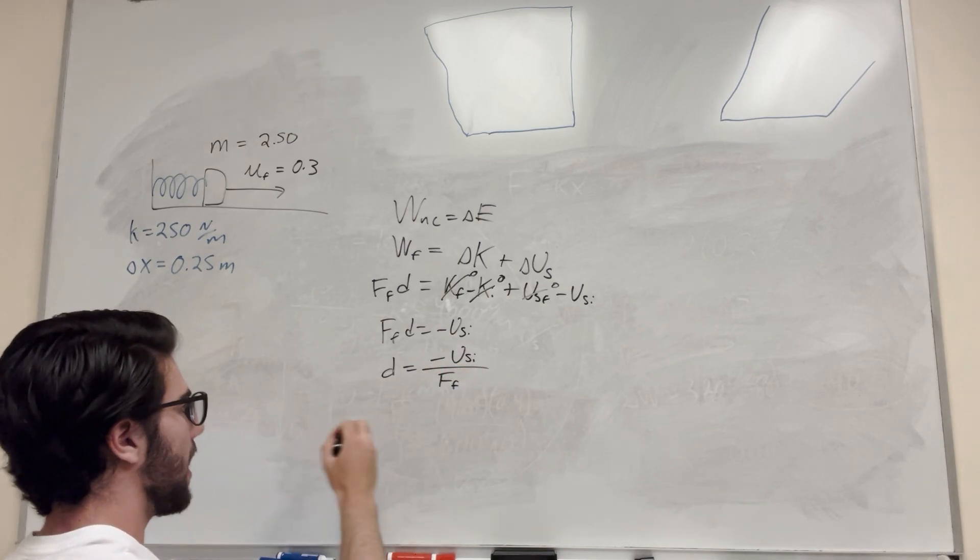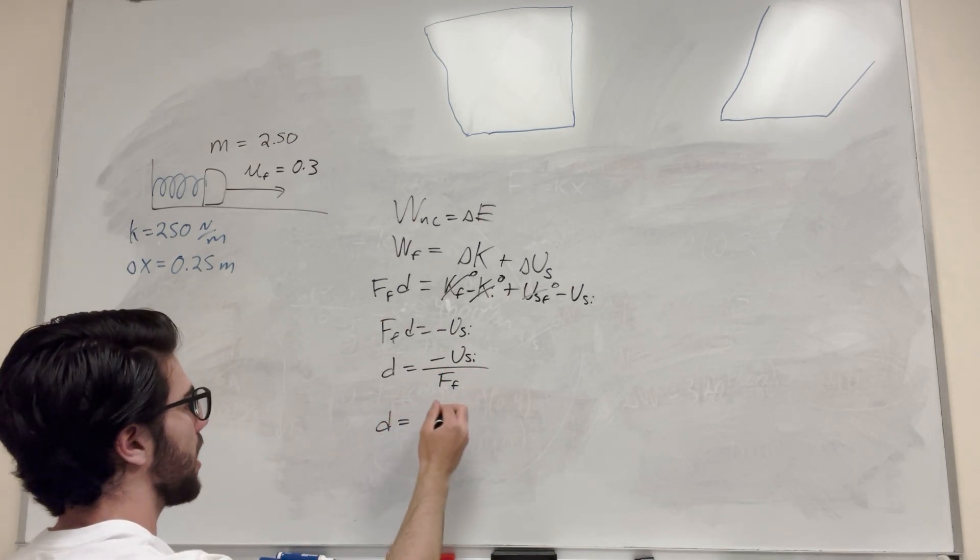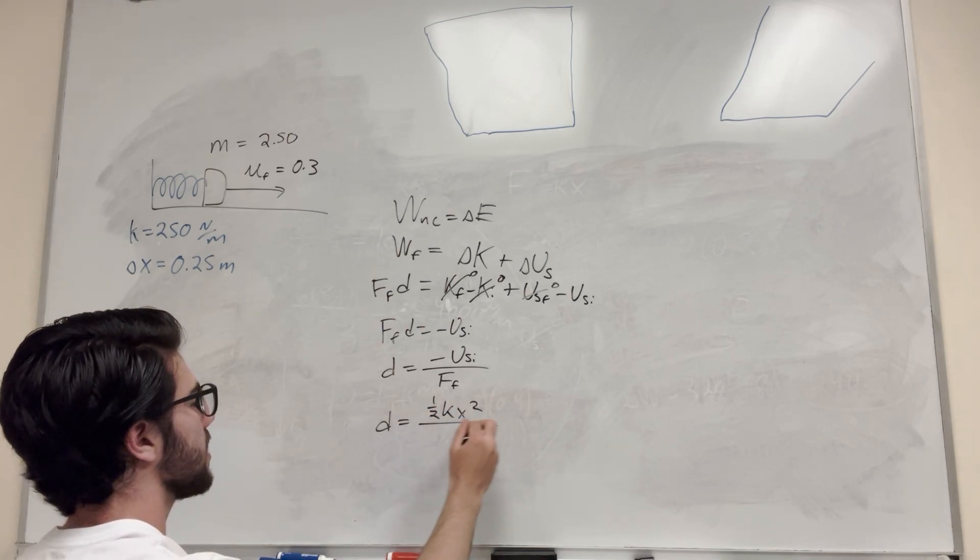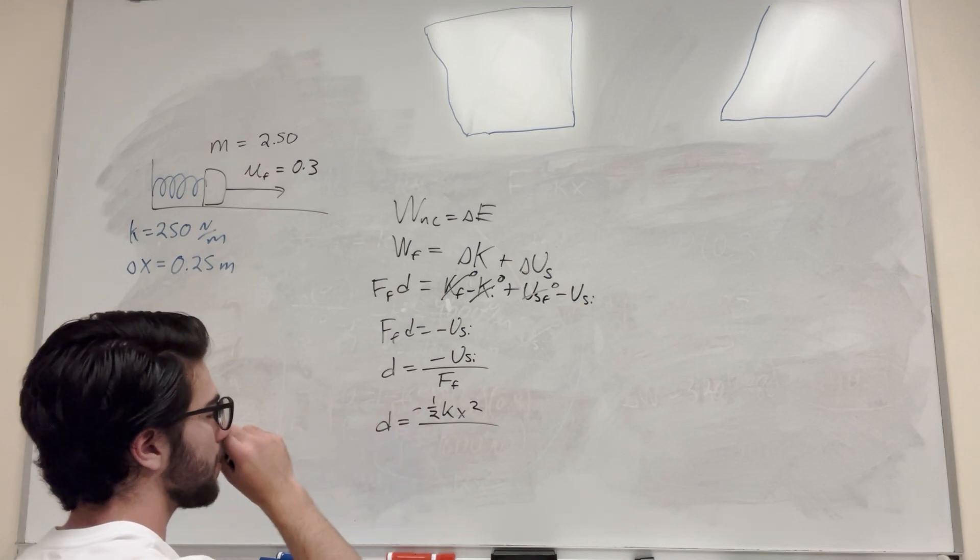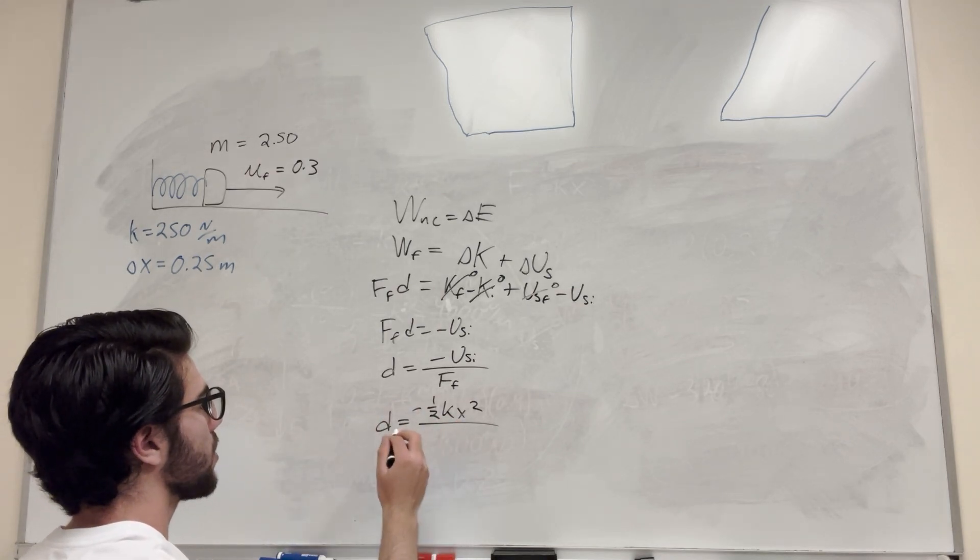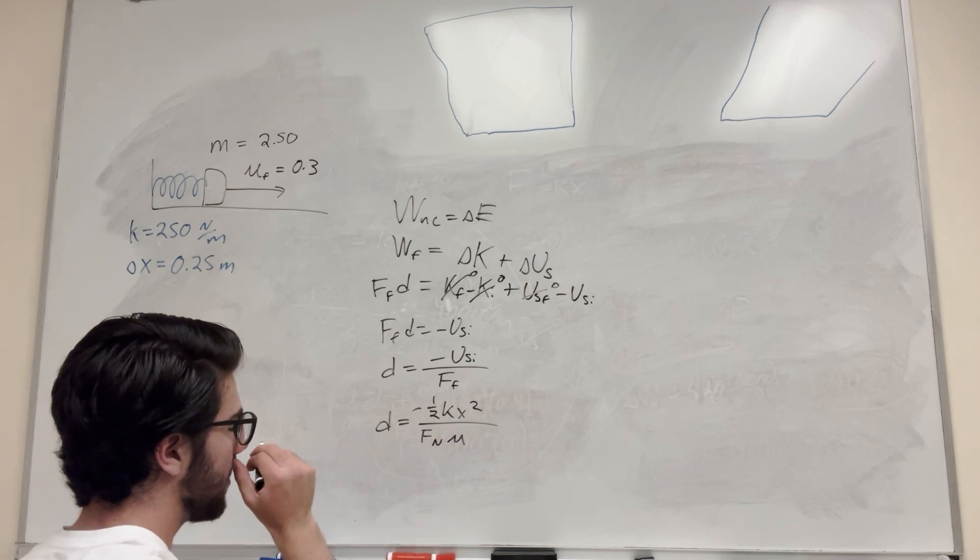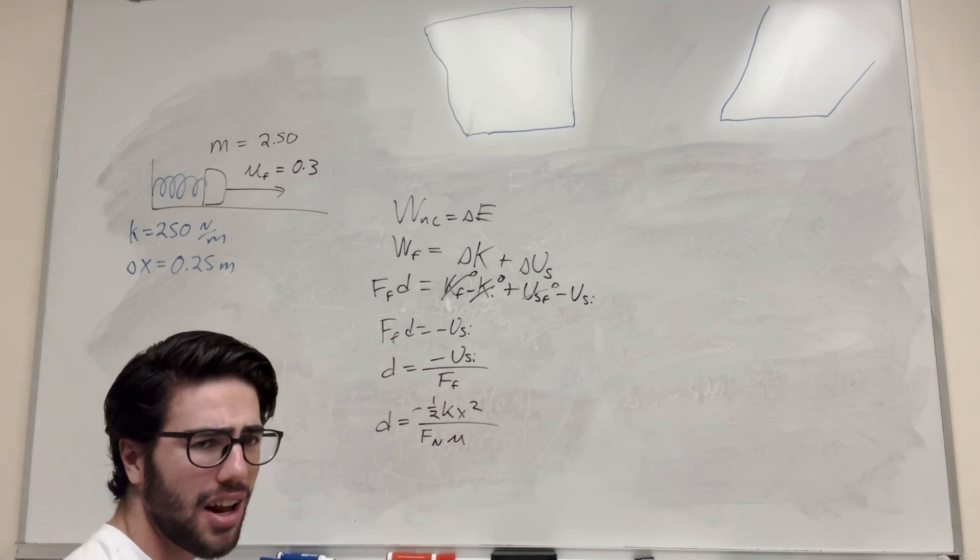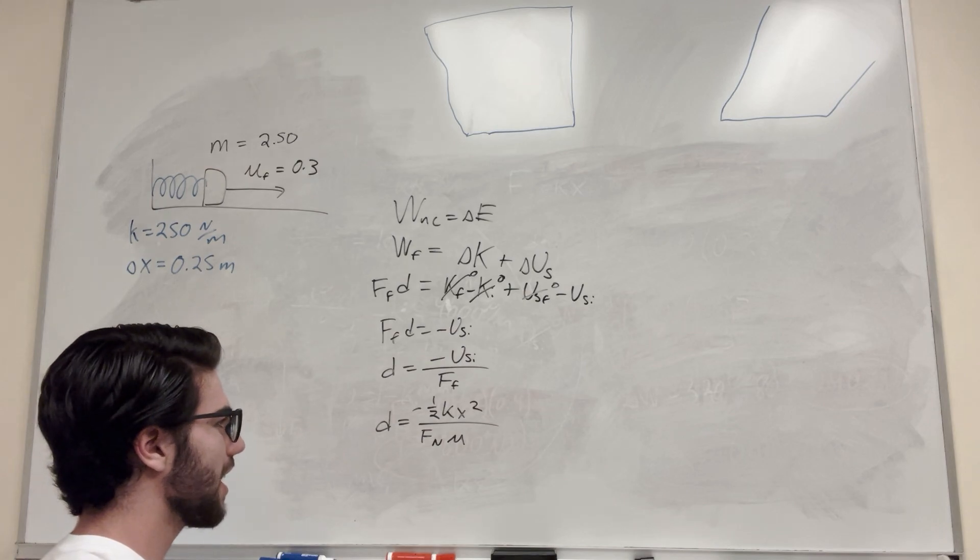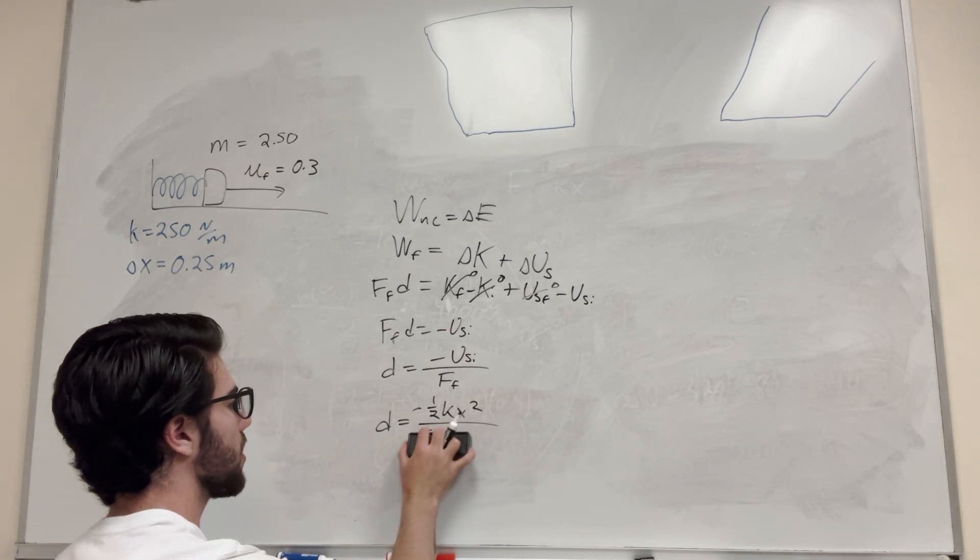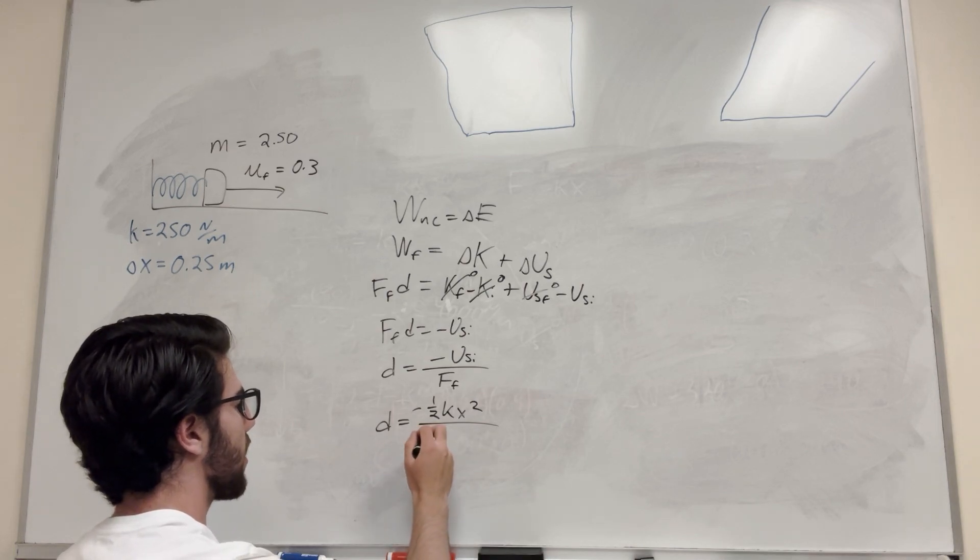So now we have to expand this stuff out. So U spring is one half K x squared, and then this is gonna be equal to, so force of friction is equal to force normal times the coefficient of friction. That's another formula I need. You need a lot of formulas for this stuff, but hopefully you can get all that down. So force of friction, or force of normal, is equal to gravity, mass, coefficient of friction.